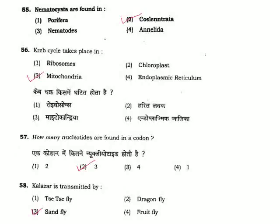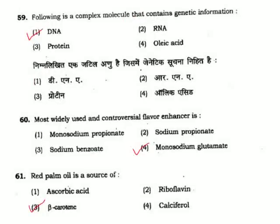Question 58: Kala-azar is transmitted by — sand fly. Question 59: Which is a complex molecule that contains genetic information — that is DNA; in all living organisms found on earth, the genetic material is DNA.